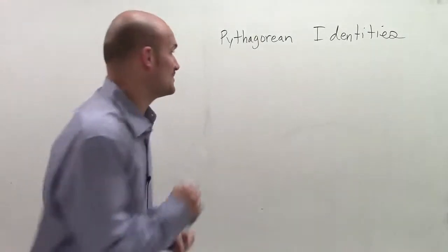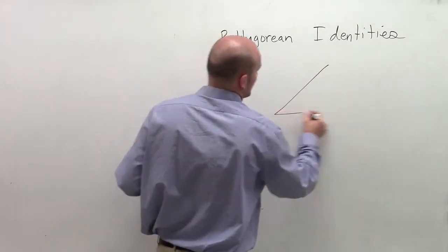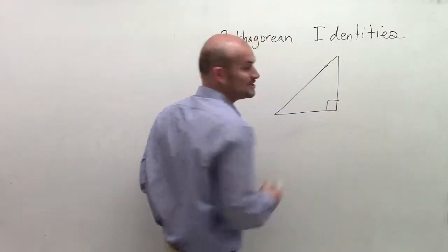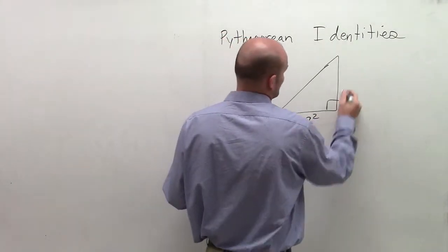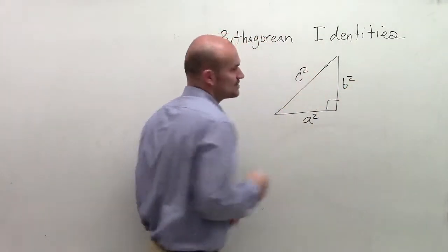Pythagorean identities, right? The first thing when we talked about a triangle, one of the first things you learned about a right triangle was the Pythagorean theorem: a squared plus b squared equals c squared.